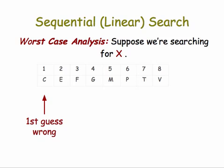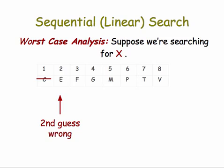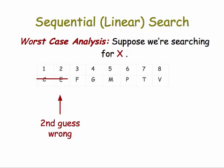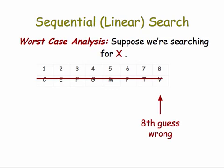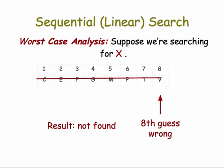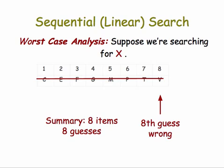So let's apply it to this example of a list with eight letters in it. Our first guess is the first item in the list, and it's wrong. So we cross it off, and we guess the second item in the list. It's wrong, so we cross it off, and we continue in this way. I think you can see where this is going until we get all the way to the end of the list, and our eighth guess is wrong. Therefore, the result is that the target is not found, and the summary in this case is that there were eight items, and it took eight guesses. So that's quite a bit different performance than binary search.